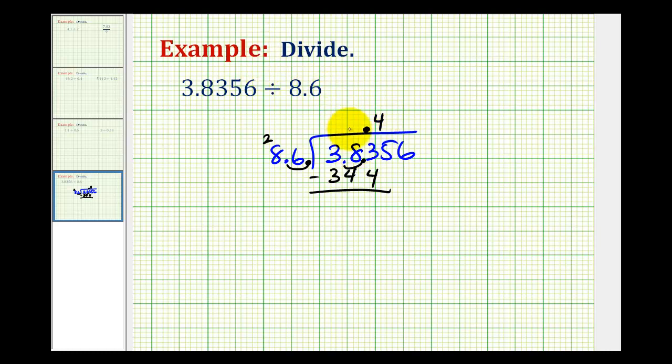So now we'll subtract. 13 minus 4 is 9. 7 minus 4 is 3. 39 is less than 86 so the 4 is correct.